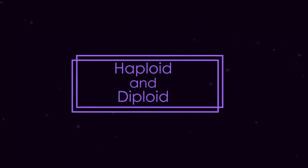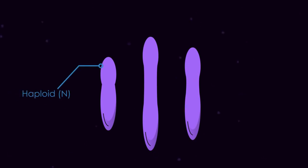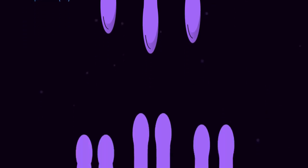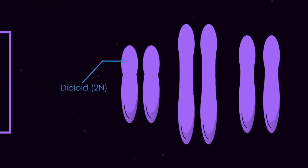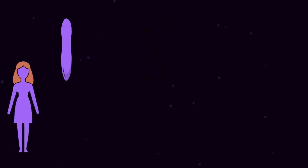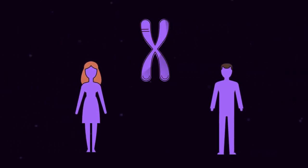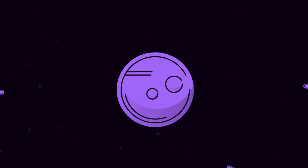And finally, what do haploid and diploid mean? Haploid cells have one set of chromosomes and are labelled as N. Diploid cells have two sets of chromosomes — 2N. Most cells are diploid. So, in humans, we have 23 pairs of chromosomes — one from our mother and one from our father. All of our cells are diploid other than the gametes.